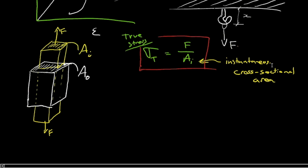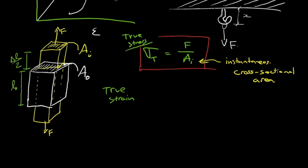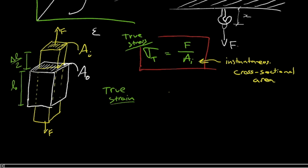We could also do the same thing for the strain, although that requires a little bit more thinking. The true strain has to account for the fact that the very first bit of elongation is over L0, but then after that, the elongation is over the previous length, which was L0 plus that delta L. So if you do that for infinitesimally small changes in length, the true strain is the integral of dl by L from L0, the initial length, to the instantaneous length.